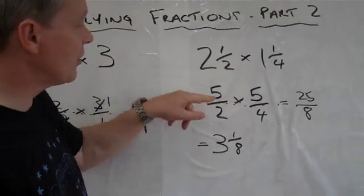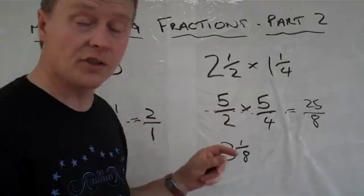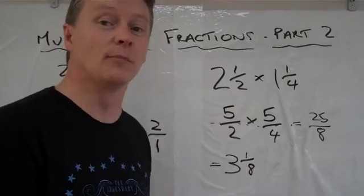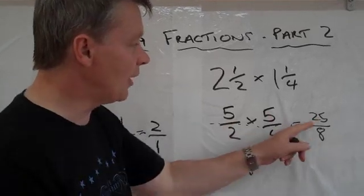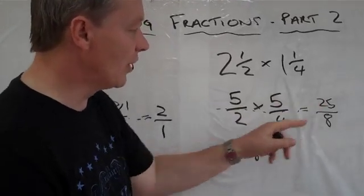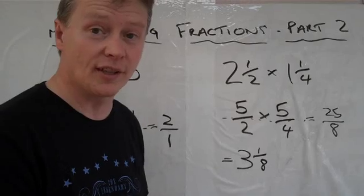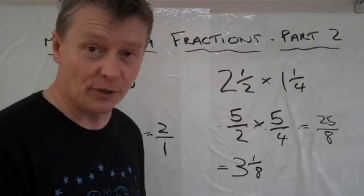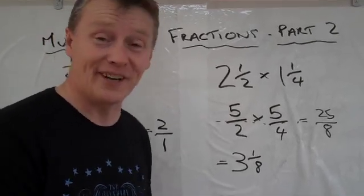To summarise: convert the mixed numbers into fractions, look to see if you can reduce top and bottom to make your numbers easier, multiply it through, and then work it out into a whole number plus a fraction that's left. There are plenty of things to try at the bottom of the screen — have a go and see how you get on.